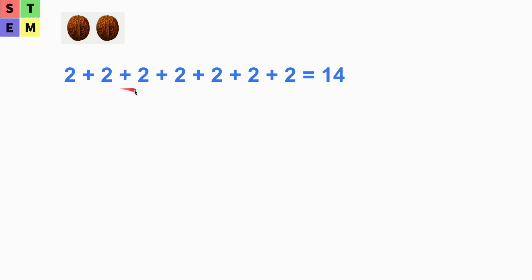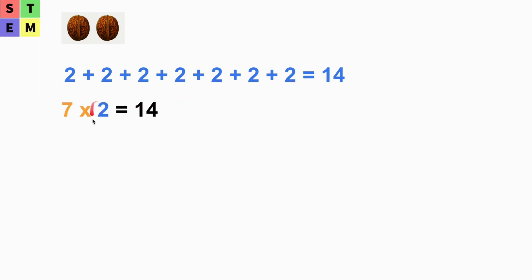So that's two plus two plus two plus two plus two plus two plus two, which equals 14. The total is 14 walnuts I eat every week. So how can we represent this in another way? We have two walnuts per day.